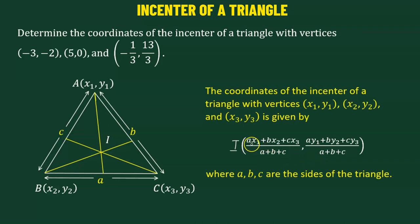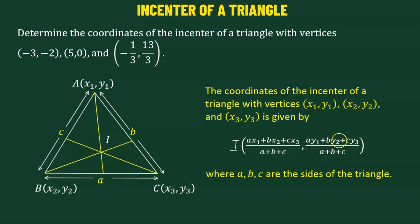Using this information, we can define the coordinates of the incenter. The x-coordinate is given by: a times x1 plus b times x2 plus c times x3, divided by the sum of the sides of the triangle. Similarly, we can define the y-coordinate using the same expression.